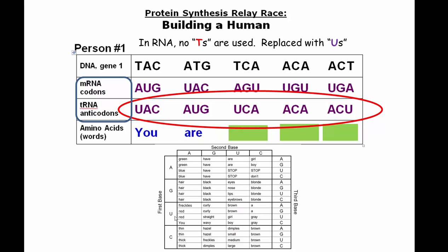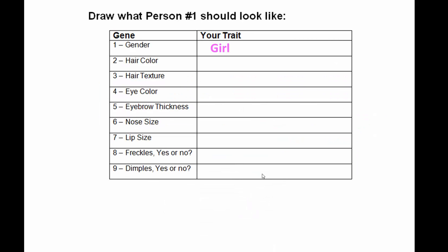Then UCA, then ACA, ACA — you're a girl. And that is a complete statement. Then ACU, ACU is going to be a stop. So what you do is go down to your person and write down it's a girl.